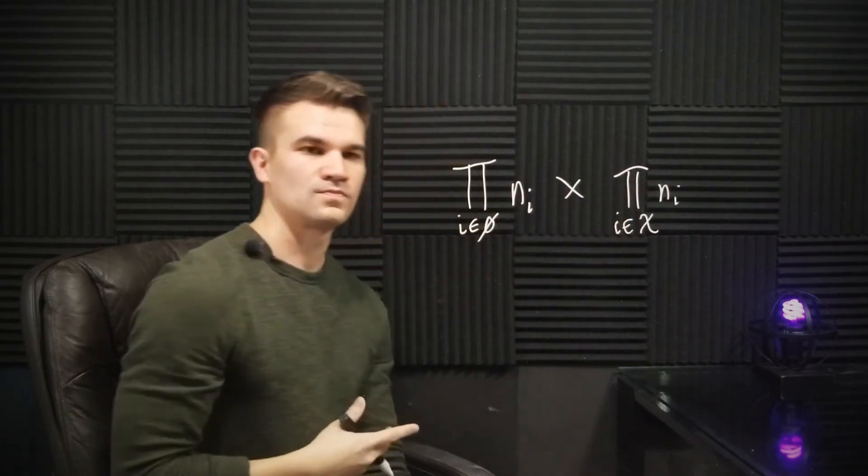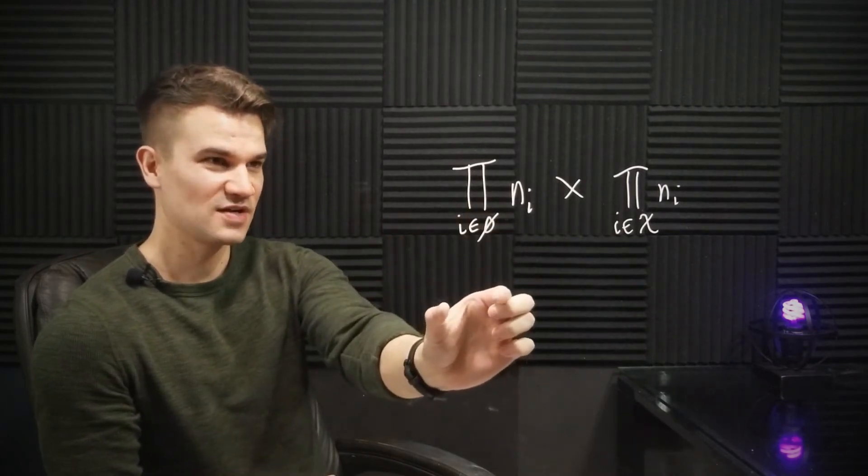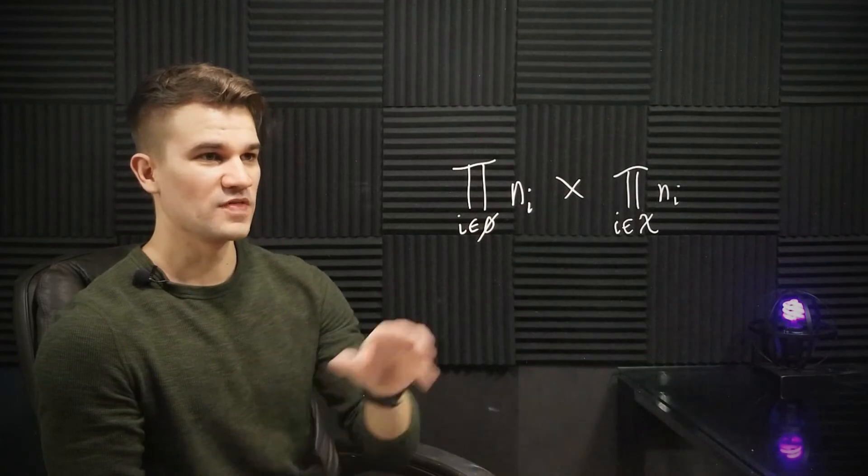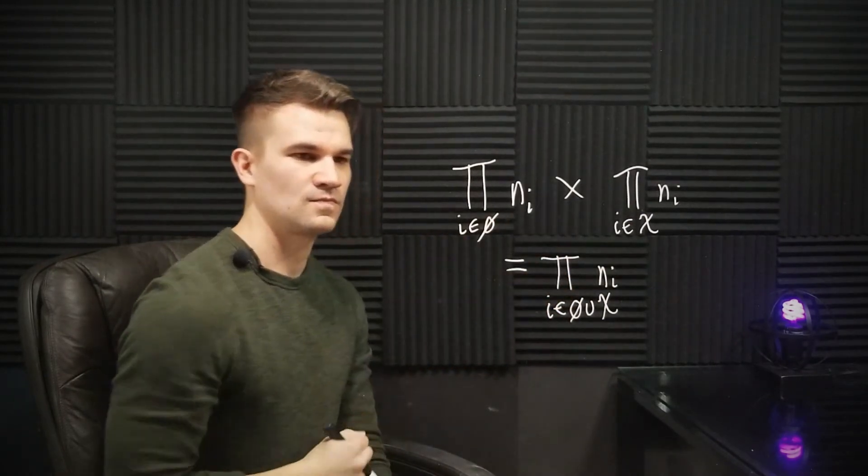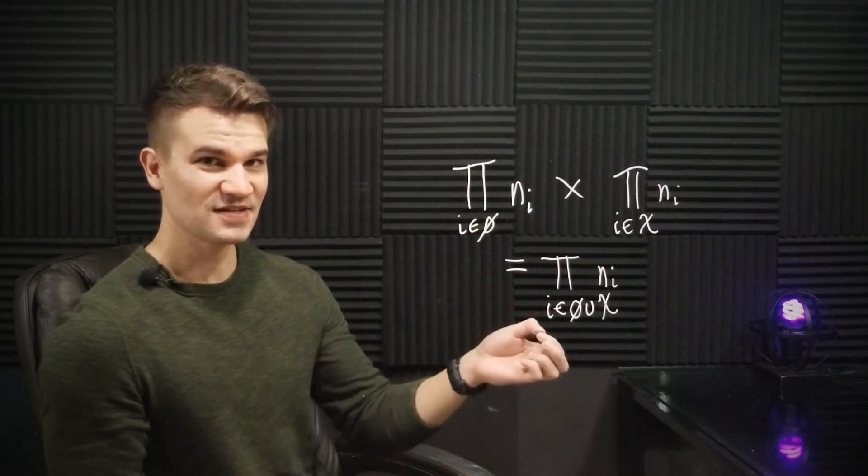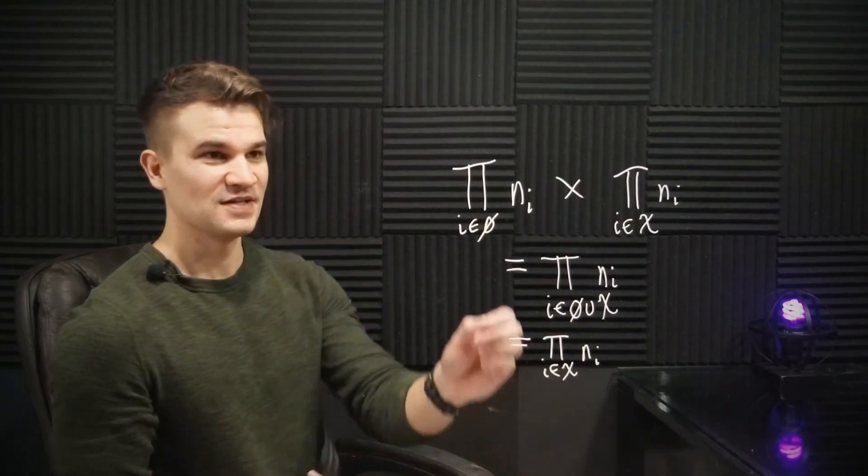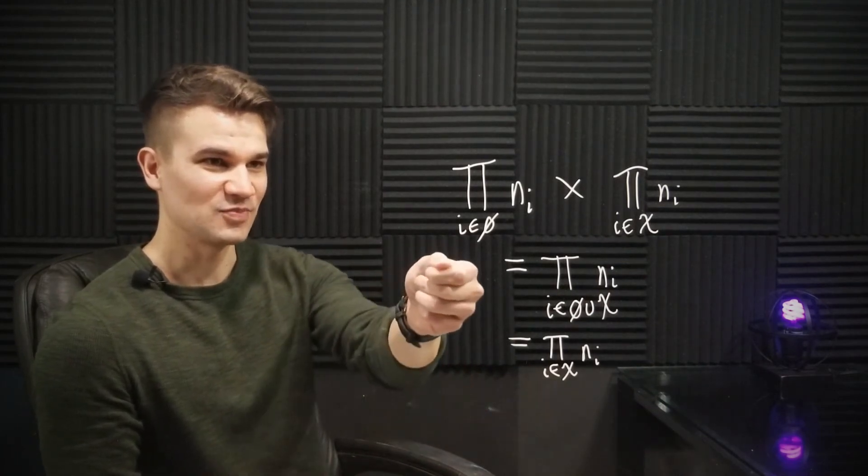For example, if we did the product: this is the empty product, the product of all numbers n sub i such that i is in the empty set. That's nothing. This is the empty product times this other product n sub i where i is in this indexing set X. Now, just like before, we want this product of products to just be one big product. So here's the product of n sub i where i is in the empty set union X. But the empty set union with X is simply X. So just like before, it turns out that multiplying the empty product with this product doesn't change this product, which requires that the empty product be equal to one.